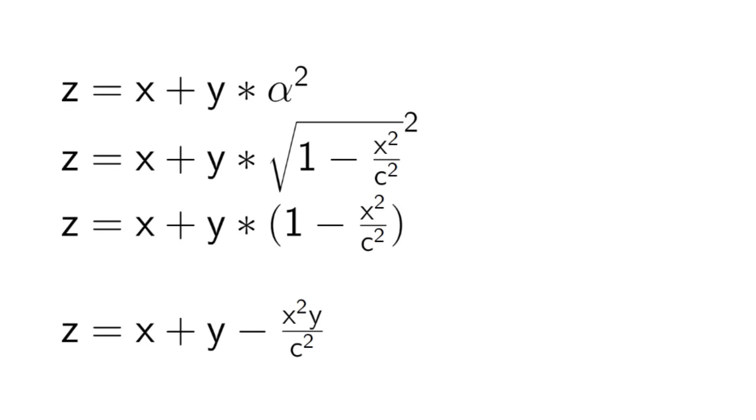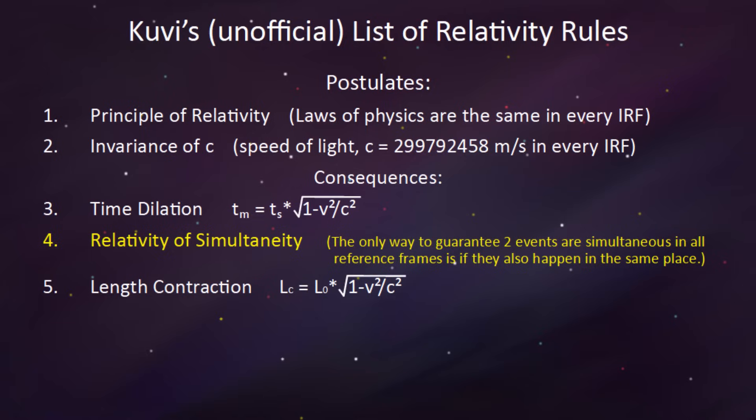There's just one problem though, this formula is still incorrect. So what went wrong? Well, it's a very subtle and tricky spot, but it has to do with rule number four, relativity of simultaneity. The only way to guarantee two events are simultaneous in all reference frames is if they also happen in the same place.